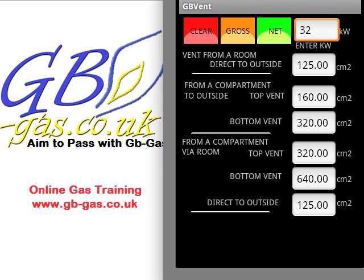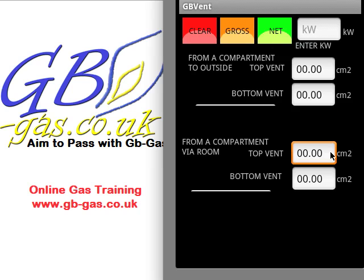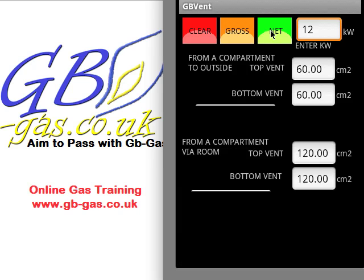If we press the back button on your phone, this will take you back to the main screen where we can have a look at room sealed appliances. When we click on the room sealed appliance button, we have a very similar screen. We input the information at the top right-hand side. Let's make this 12 kilowatts net. So we've got a room sealed 12 kilowatt net appliance in a compartment vented direct to outside — a top vent of 60 cm² and a bottom vent of 60 cm². If it's in a compartment and we're ventilating it into the room, the vents need to be twice the size: a top vent of 120 cm² and a bottom vent of 120 cm².